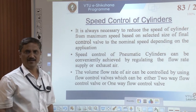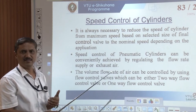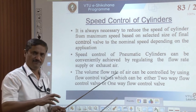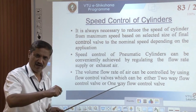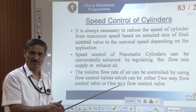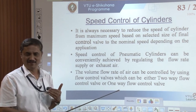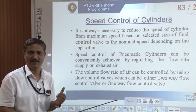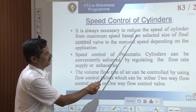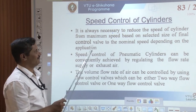Speed control of pneumatic cylinders is always necessary because sometimes if you operate too fast, there can be errors in the process. For example, if you are washing utensils, sometimes you reduce the knob because you want to give more time to the washing. Without wasting water, you reduce the flow and make your process slow. In industry, it is always necessary to reduce the speed of the cylinder from maximum speed to a selected level for the final controls.